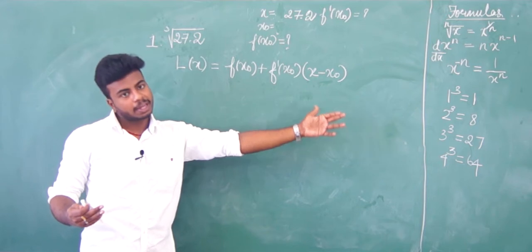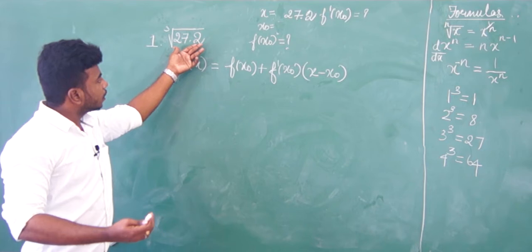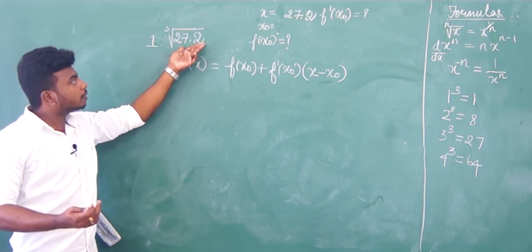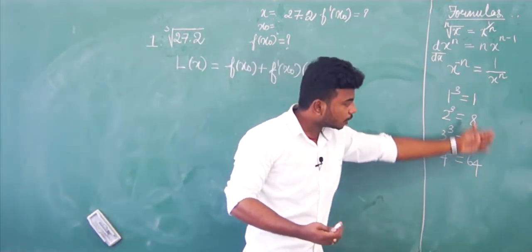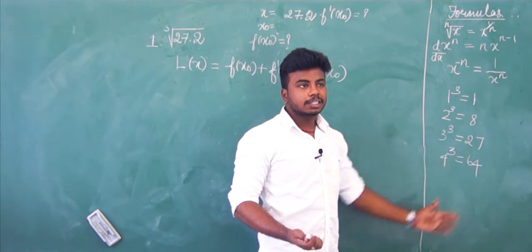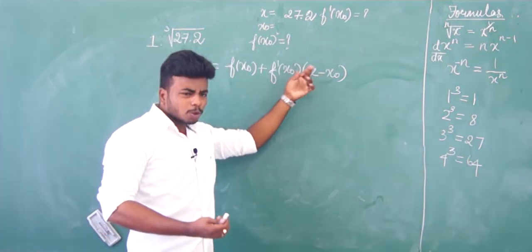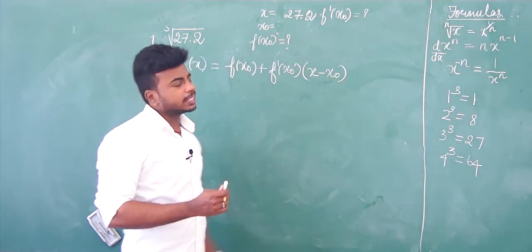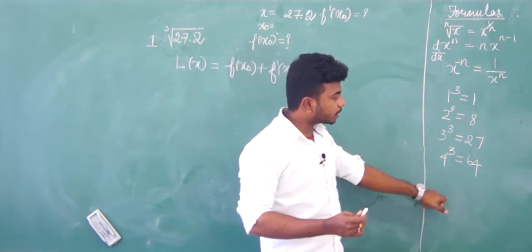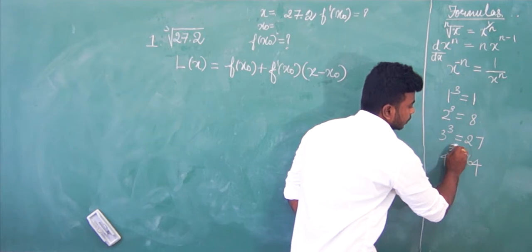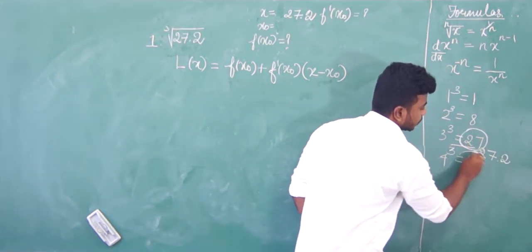27.2 lies between the cube numbers 27 and 64. The next cube numbers around 27.2 are 3 cubed = 27 and 4 cubed = 64. So 27.2 is between 27 and 64.